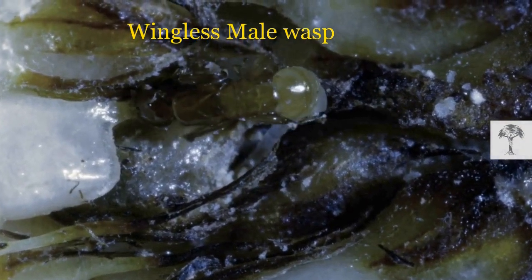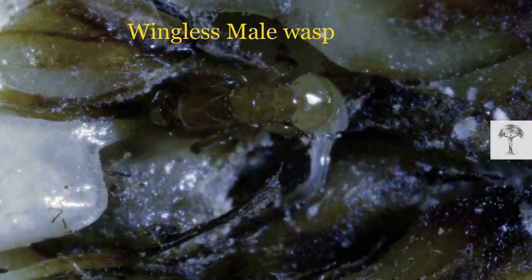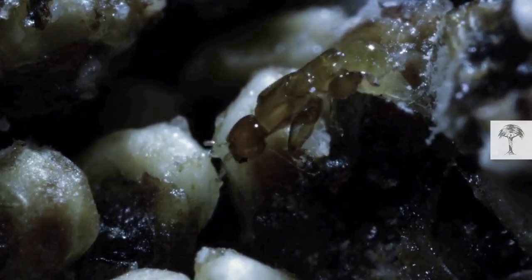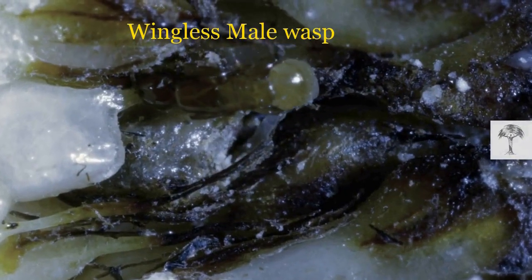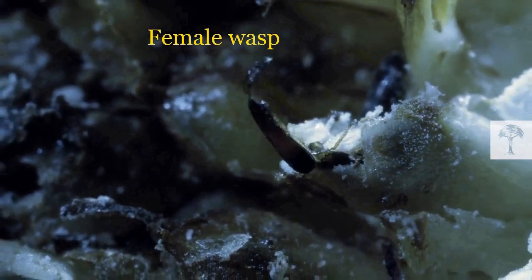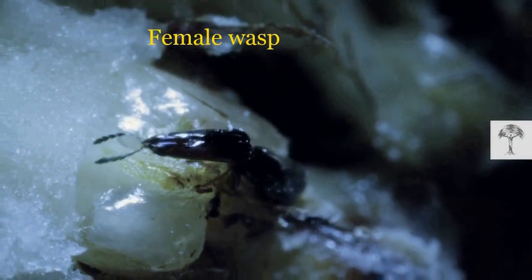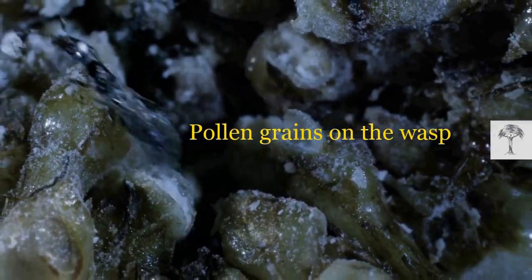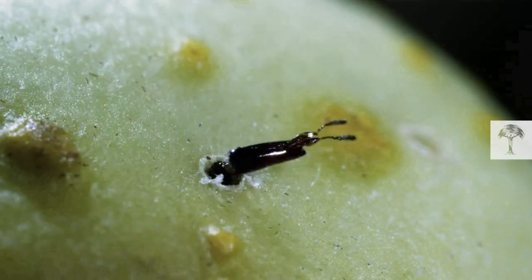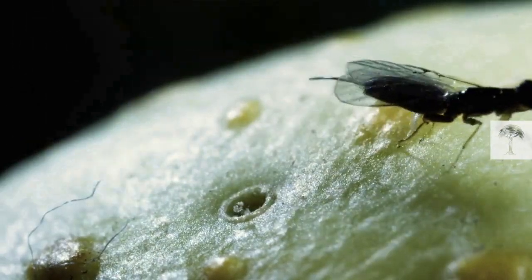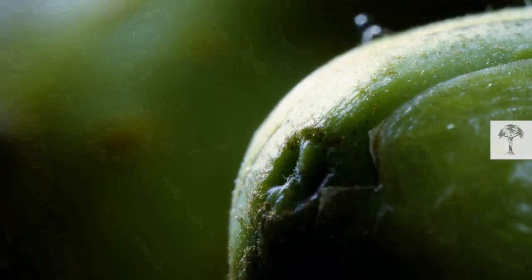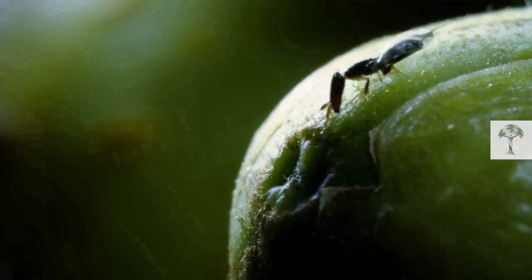The males are smaller than the females and do not even have wings — they will never fly. After mating, like the mother, they die inside the fig that was their home all their lives. The females emerge and are ready to find another fig to lay their eggs. Before leaving, the females take a supply of pollen to carry to the next fig, at which point the male flowers inside the fig are ripe and loaded with pollen. This incredible partnership requires very fine tuning and synchronicity between the plant and the pollinator.